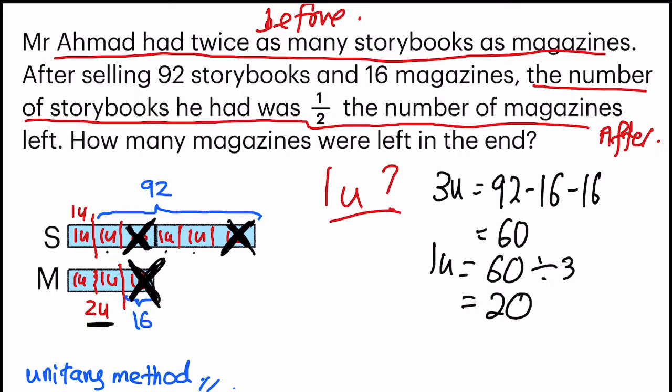So we are finding two units. Correct? So the last step is just multiply. And that's it. That's my final answer. 40 magazines left.